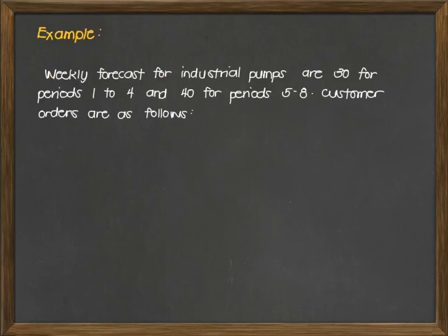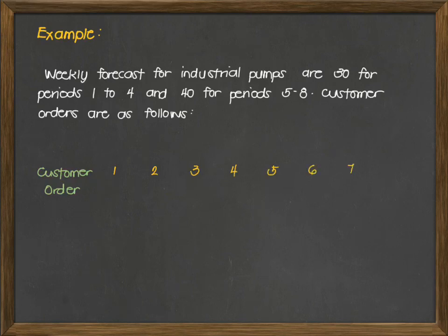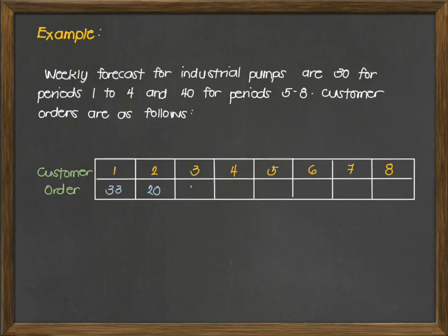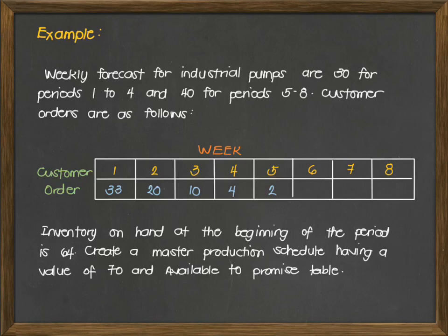For our example, the weekly forecast for industrial pumps is 30 for periods 1 to 4, and 40 for periods 5 to 8. We are given customer orders of 33, 20, 10, 4, and 2 for weeks 1 through 5. The inventory on hand at the beginning of the period is 64. We want to create a master production schedule with a value of 70 and an available-to-promise table.